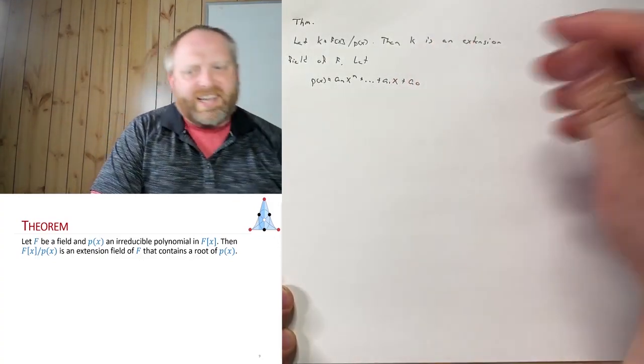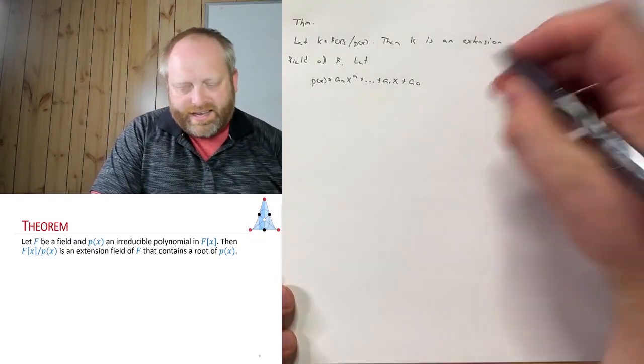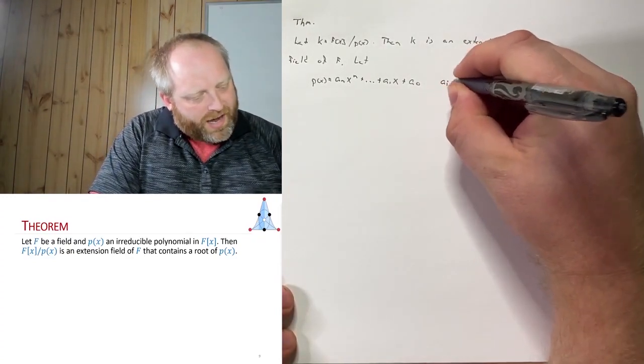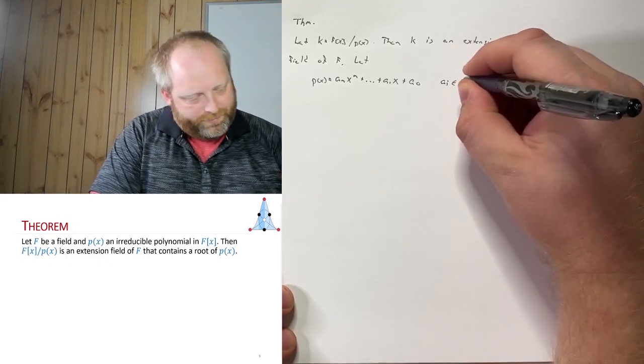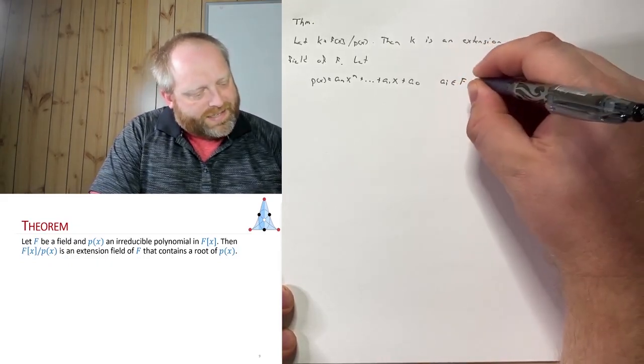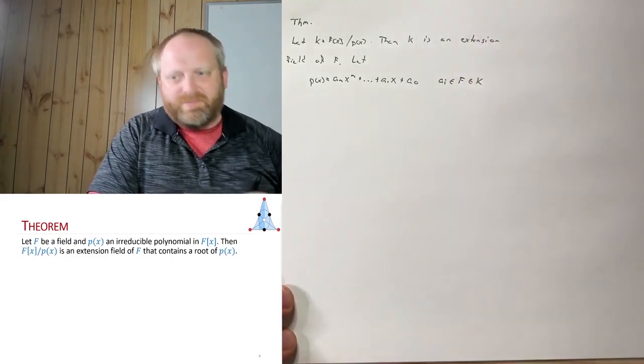And of course, in this case, since this is starting off in F[x], the coefficients, the a_i's, these are an element of F. And since they're an element of F, they're also an element of K.